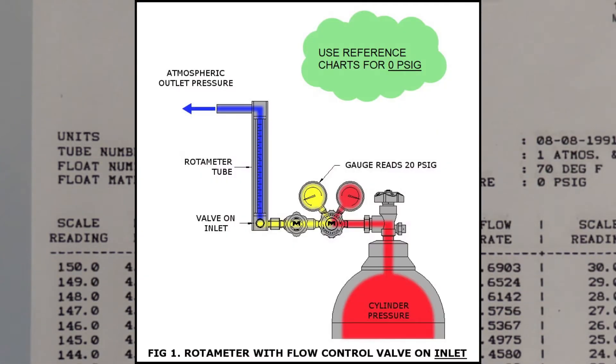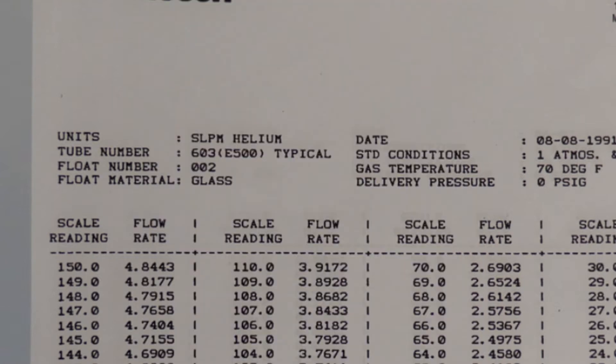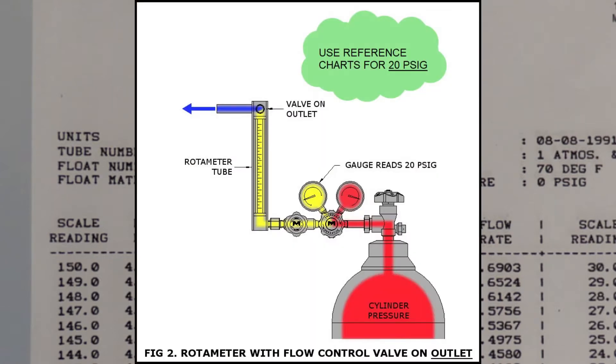The pressure that you choose is the pressure that is in the tube. Most people have the valve on the inlet with the rotometer flowing to an instrument or process at atmospheric pressure. In that case you would use the zero psi charts. If your valve is on the outlet of the rotometer, then use either a pressure correction factor or a reference chart corresponding to the pressure in the tube.